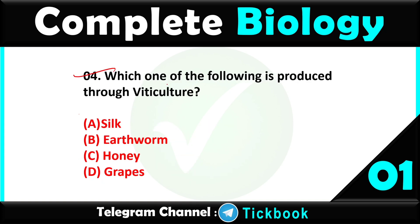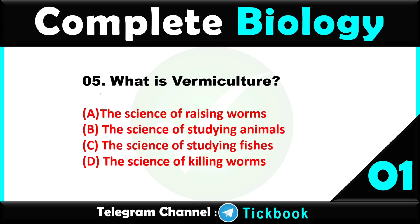Question number four: which one of the following is produced through viticulture — option number D, grapes, will be the right answer. Question number five: what is vermiculture — option number A, the science of raising worms.